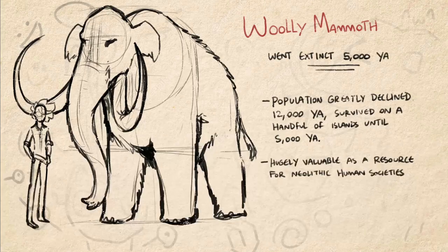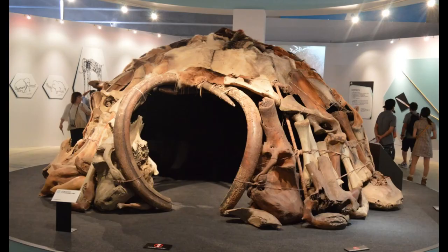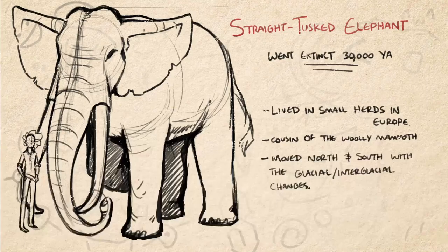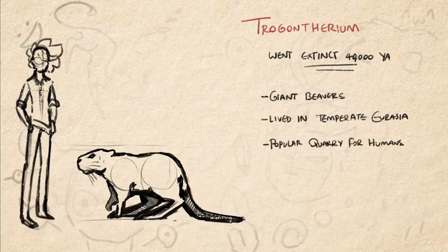The woolly mammoth — the star of the Ice Age. The woolly mammoth was pretty important to Neolithic humans as a source of food during the darkest days of the Ice Age. They were used for clothing, meat, and a huge variety of resources, the most interesting of which were their hides and bones being made into tents by the Ukrainian humans of 26,000 BCE. The straight-tusked elephant: these lived in Europe in small herds and were also hunted and scavenged by humans, going extinct around 33 to 30,000 years ago. Trogontherium: a temperate Eurasian giant beaver that was a popular quarry for humans — funnily enough not very strongly related to the American modern beaver.